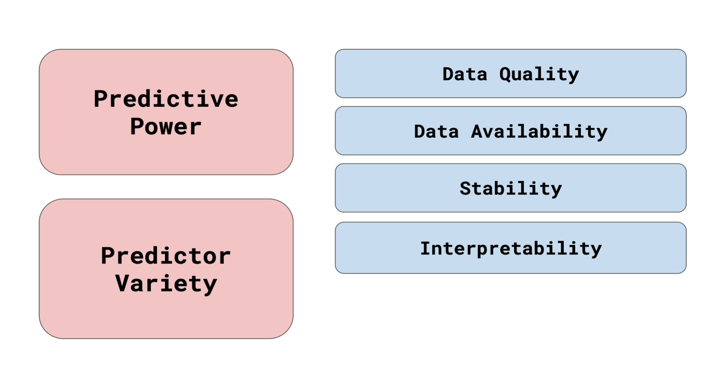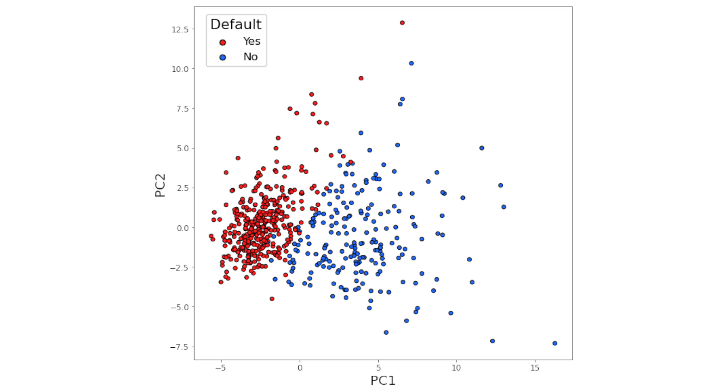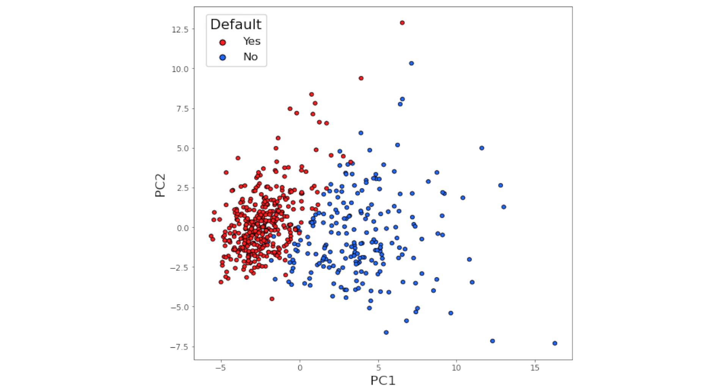So far, we have talked about creating features using simple aggregations like average and minimum. There are also more complicated feature engineering techniques like principal component analysis. Using this method, we could take all the features in the income group and calculate the principal components.